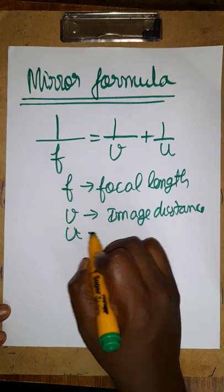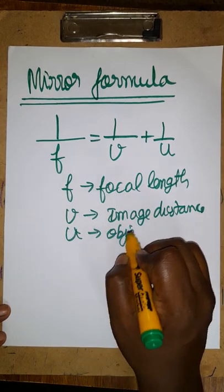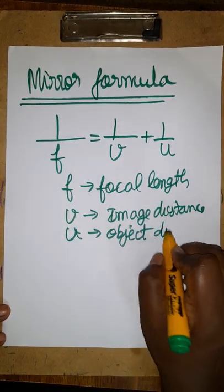What is u now? Object distance from the pole center. Always you should measure from the pole center only.